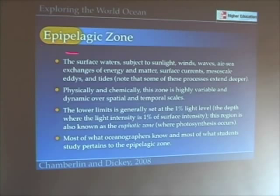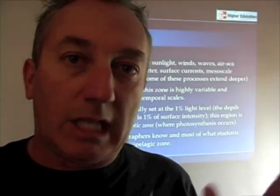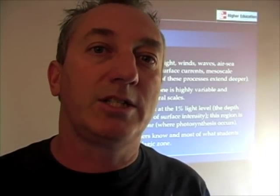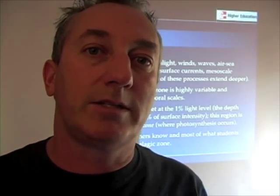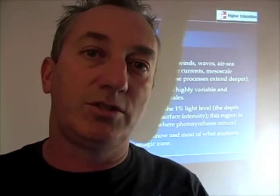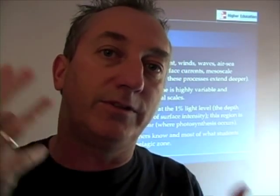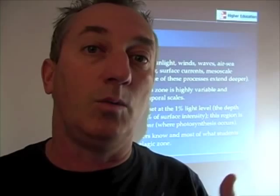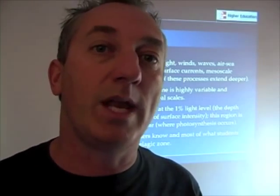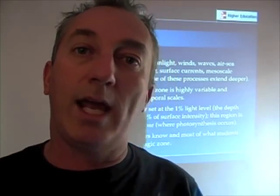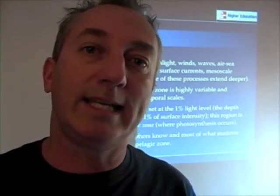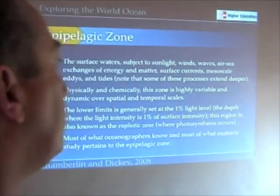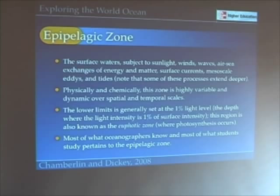Let's talk in a little more detail about the photic zone, or what we call the epipelagic zone. This is really where there's a lot of action in the ocean. The epipelagic zone is subject to atmospheric processes — there's exchange of gases, exchange of energy from sunlight, and exchange of energy from winds, which impart kinetic energy and momentum to the surface of the ocean. We have waves, currents, vertical mixing, tides, eddies, and all these different kinds of things.